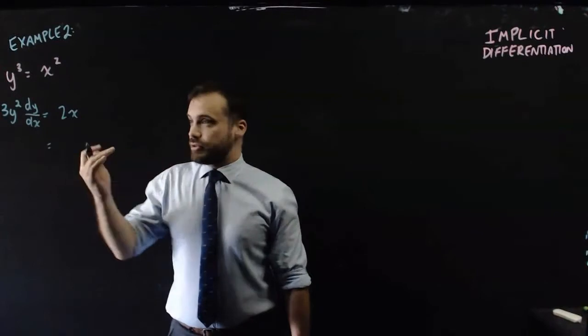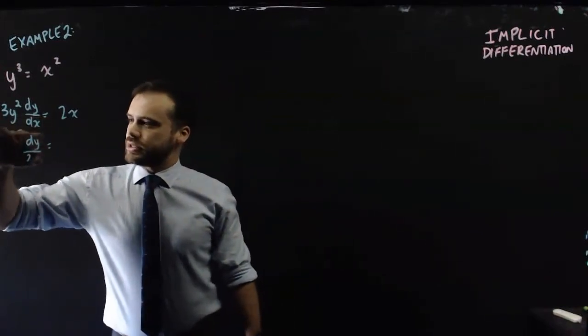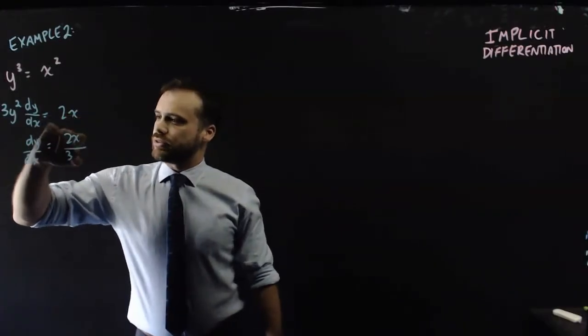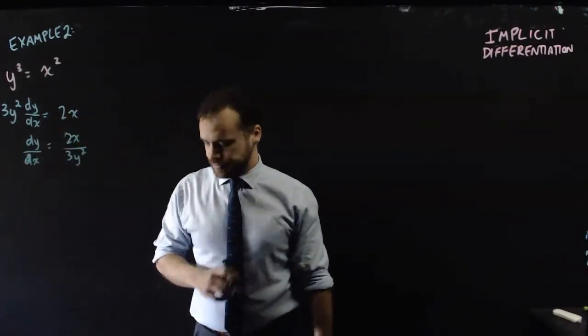So times dy/dx equals the derivative of x squared is 2x. And then we rearrange. dy/dx equals 2x over 3y squared. That's the whole question.